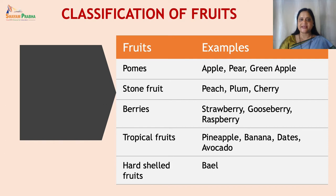Classification of fruits: Pomes — examples: apple, pear, green apple. Stone fruits — examples: peach, plum, cherry. Berries — example: strawberry, gooseberry, raspberry. Tropical fruits — pineapple, banana, dates, avocado. Hard shell fruits — example: bael fruit.